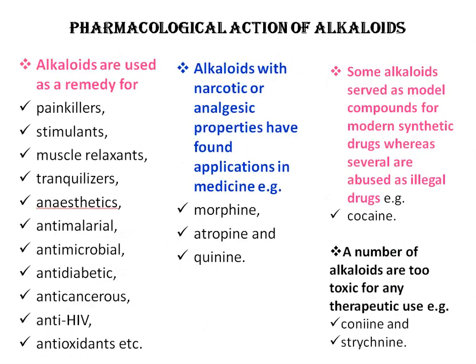Next is pharmacological action of alkaloids. From the beginning of civilization, alkaloid-containing plant extracts have been used in all cultures as medicine and also as poisons. Alkaloids are used as painkillers, stimulants, muscle relaxants, tranquilizers, anesthetics, antimalarial, antimicrobial, antidiabetic, anticancerous, anti-HIV, and antioxidant agents. Alkaloids with narcotic or analgesic properties have found application in medicine — for example, morphine, atropine, and quinine. Some alkaloids have served as model compounds for modern synthetic drugs, whereas several are abused as illegal drugs like cocaine.